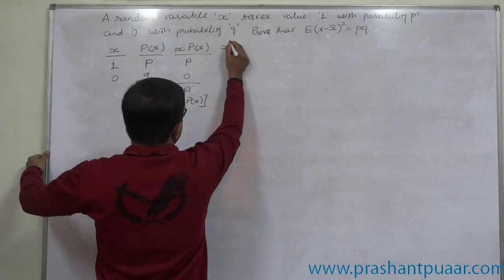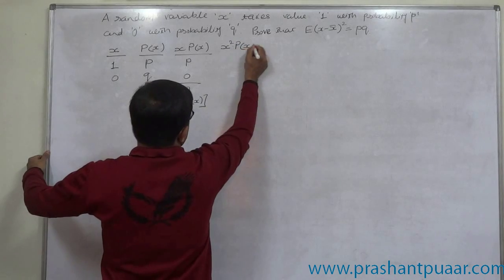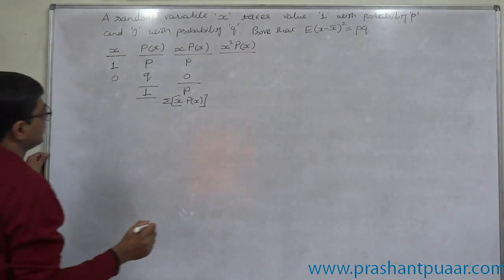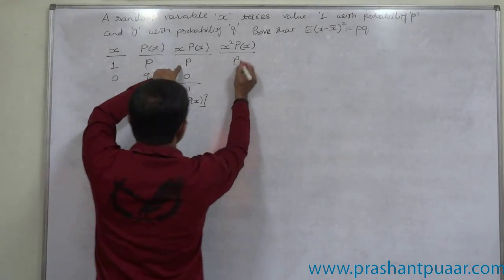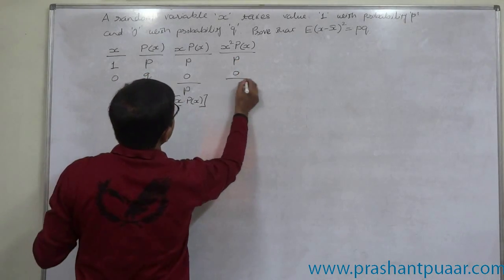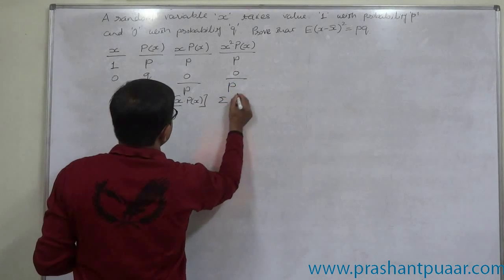And again another column we need is X square into P of X. X into X into P of X. 1 into P again comes to P and 0 into 0 remains 0. So summation of this total is also P.